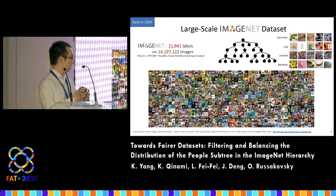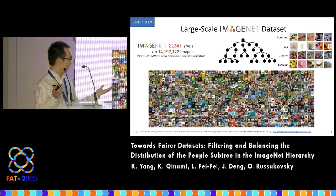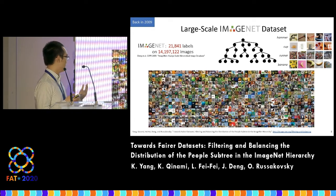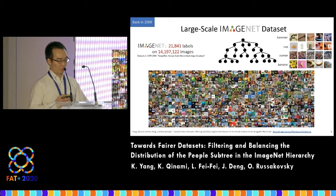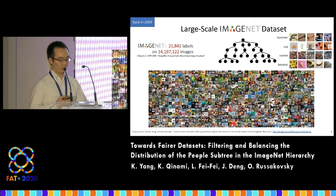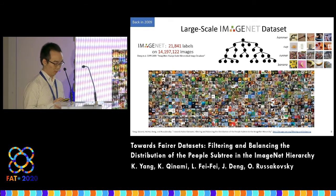In contrast, ImageNet curated several orders of magnitude more data. To collect and verify images at this scale, the ImageNet researchers had to design an automatic pipeline involving large-scale crowdsourcing with thousands of workers.